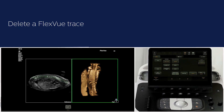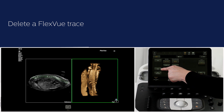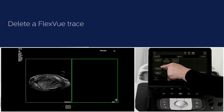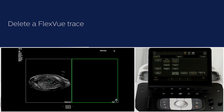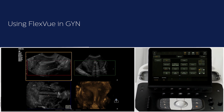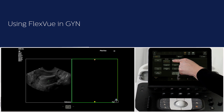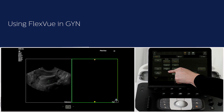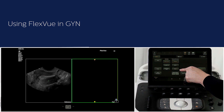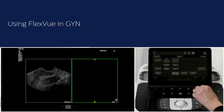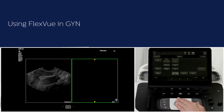If you want to delete a FlexView trace and start over, press delete on the touchscreen. I will now demonstrate FlexView using a Geini dataset. Activate FlexView, choose the trace type and thickness orientation, draw the line and adjust the position.